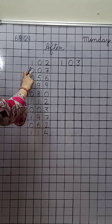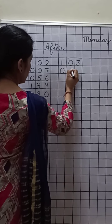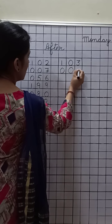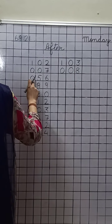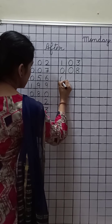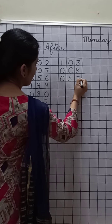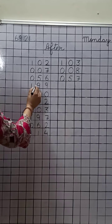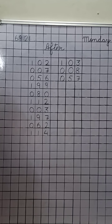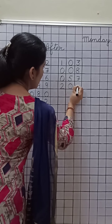Very good. What comes after only seven? Only eight. Good, write down only eight. After fifty six — fifty seven. Excellent, write down fifty seven. After one hundred ninety nine — two hundred. Wow, write down two hundred.